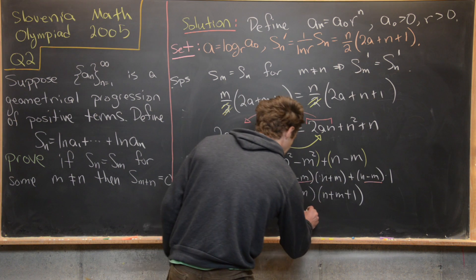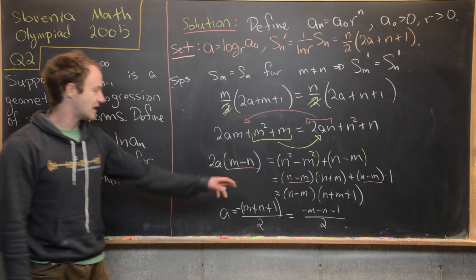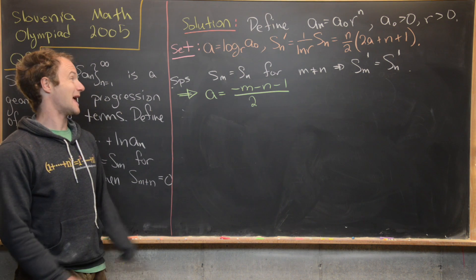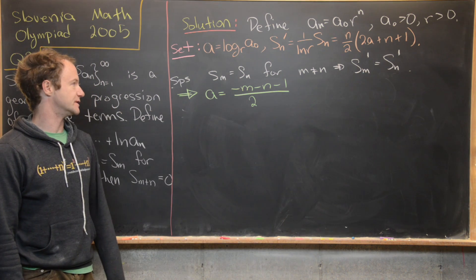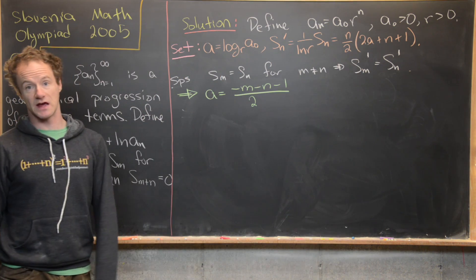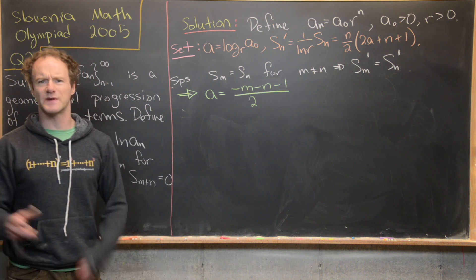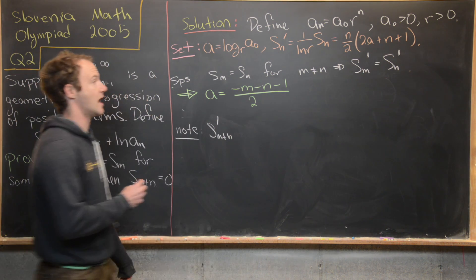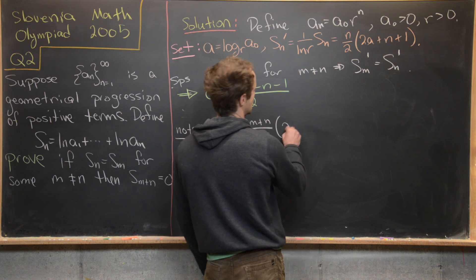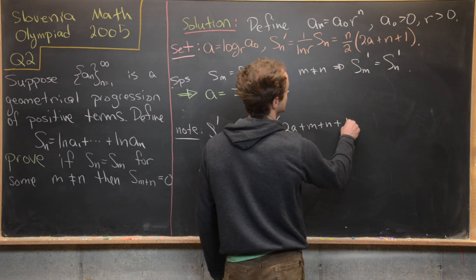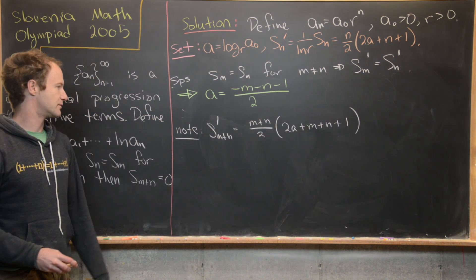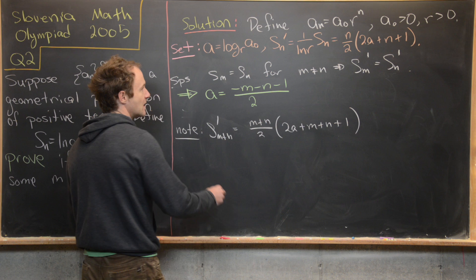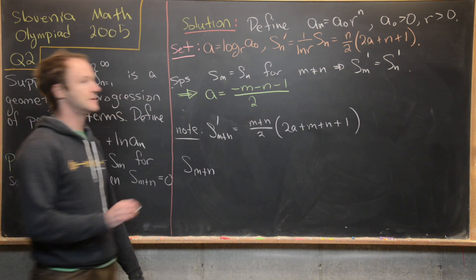Since the closed-form formula holds for all natural numbers, we can replace n with m + n. So s_{m+n}' = ((m+n)/2)(2a + m + n + 1). And s_{m+n} = ln(r) · s_{m+n}' = ln(r) · ((m+n)/2)(2a + m + n + 1). We know the value of a, so let's substitute it in.